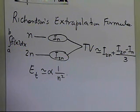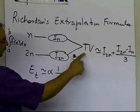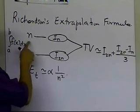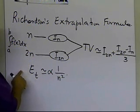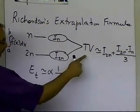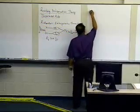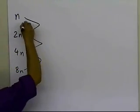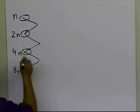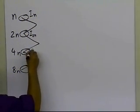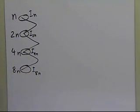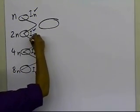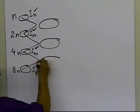What Romberg says is that we can take these approximations of the true value and continue to make better approximations by getting more values — with n segments, then 2n, then 4n, then 8n segments, and so on. We can use that to get better approximations. So if we call these I-sub-n, I-sub-2n, I-sub-4n, and I-sub-8n, we can take adjacent pairs and get better approximations at each level.